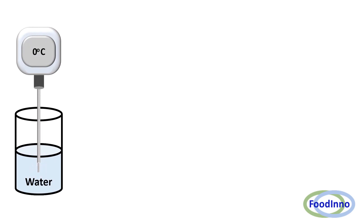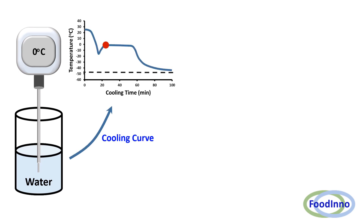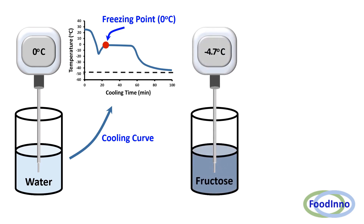We can understand freezing point depression from this example. 50 ml of pure water placed in a −50°C cold chamber shows a freezing point at 0°C, as expected. In another experiment, 50 ml of fructose solution at 30% concentration was placed in the same −50°C environment to determine its cooling curve.